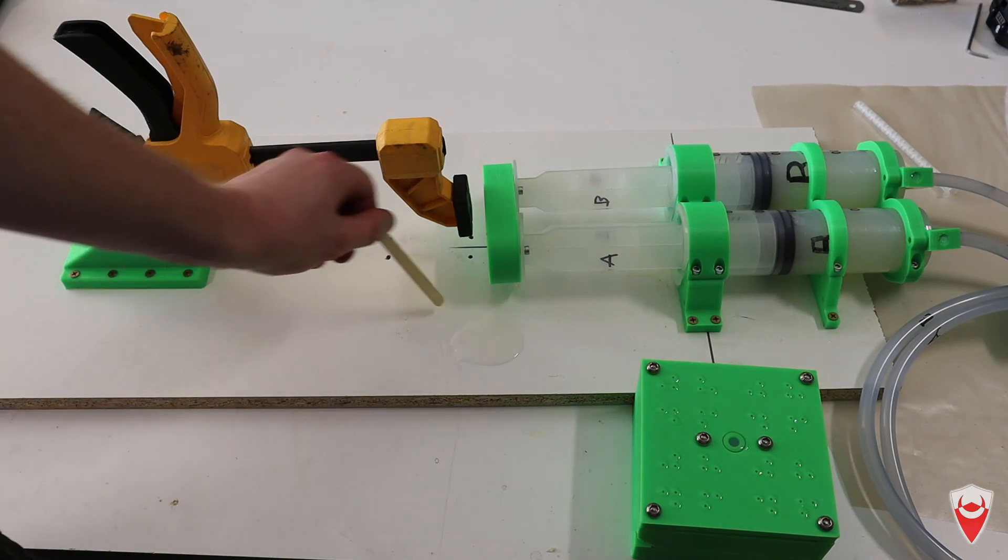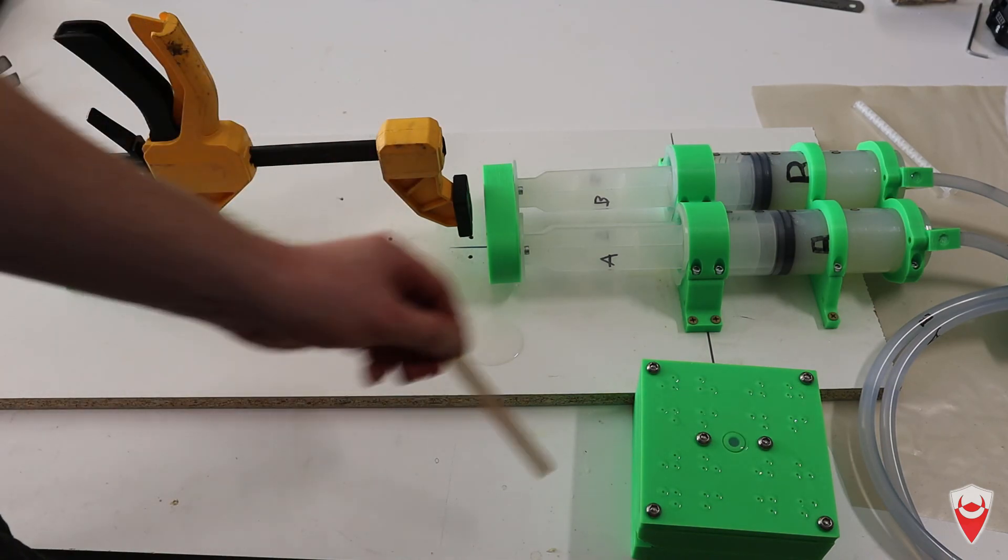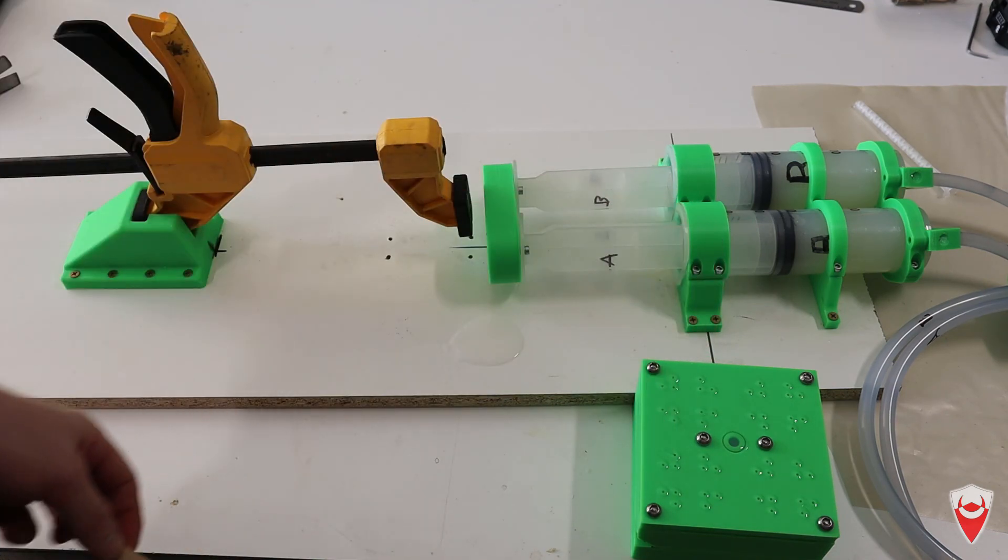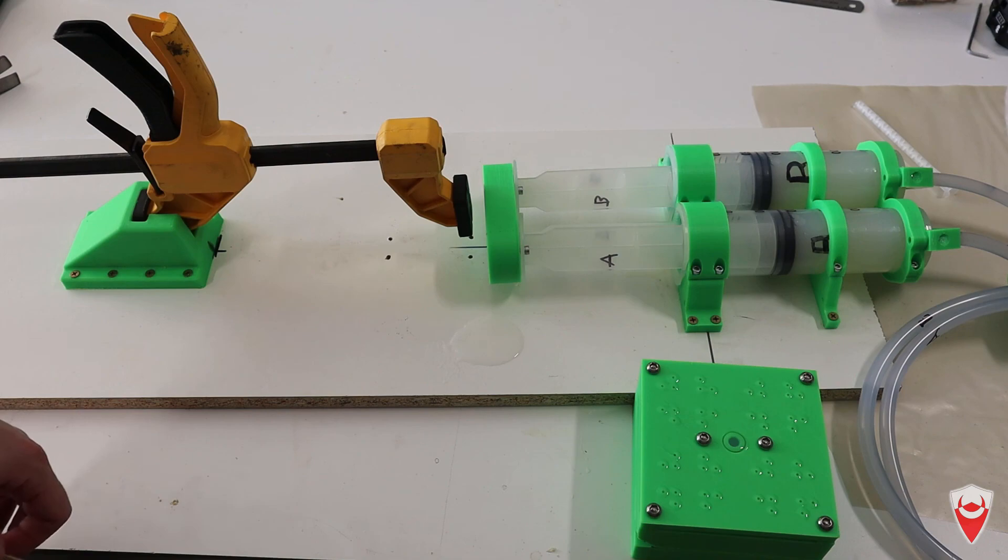But as you saw over here, the flow rate's not the best. It took about 12 minutes to fill this mould here. That's only 80 grams of silicon. So I'm going to need to do something to fix that. Stay tuned and we'll see what comes out of it. Thanks for watching. Have a good day.